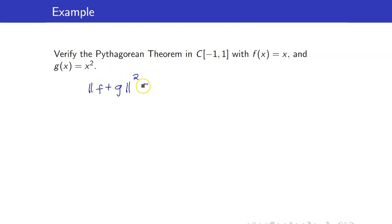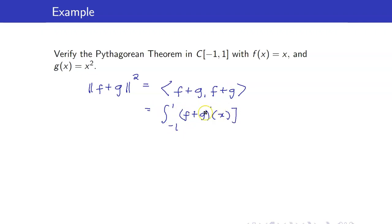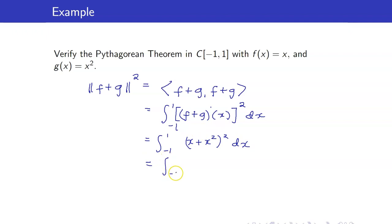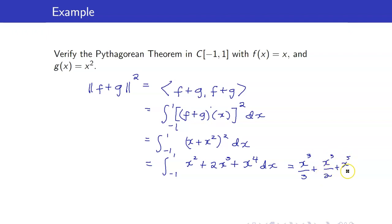Let me first compute the norm of f plus g squared, that is equal to the inner product of f plus g with itself. That's equal to the definite integral of (f plus g)(x) squared. f plus g is x plus x squared, so squaring that and integrating gives x cubed over 3 plus x to the fourth over 2 plus x to the fifth over 5 from negative 1 to 1, which is equal to 16 over 15.